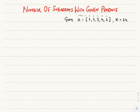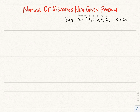Hi everyone. The problem I'm going to discuss in this video is: given an array of positive numbers from 1 onwards excluding 0, and a number k, we need to find the number of subarrays having product exactly equal to k. Let's take an example to understand. A is the given positive integer array and k is 24. The answer should be 4 for this case.